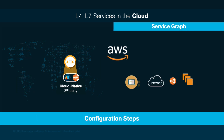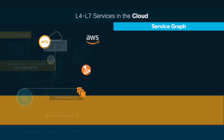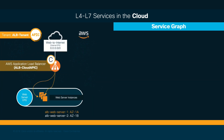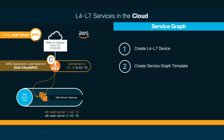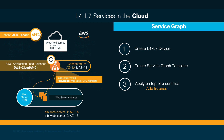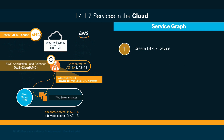Let's begin deploying our ALB on AWS. On screen, you may see a small diagram with the names utilized along the configuration. First, we will create our Layer 4-Layer 7 device named ALB-CloudAPIC. Next, we are going to create a Service Graph template where we will embed our ALB device. To finalize, we add a contract between the external and application EPGs, allowing port 80 to reach the application and answer back to the consumer. Adding listeners allows the ALB to understand what to do with the request.